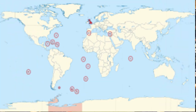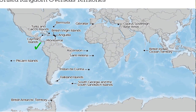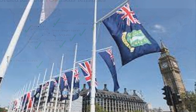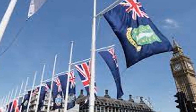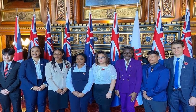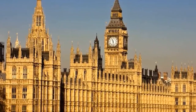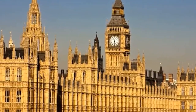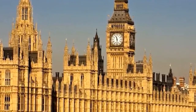Then there are 14 overseas territories across the globe, 10 of which are permanently inhabited by British nationals. All these territories have a historic link to the United Kingdom, and these territories don't have a separate international representation. They also don't have representation in the United Kingdom's Parliament.